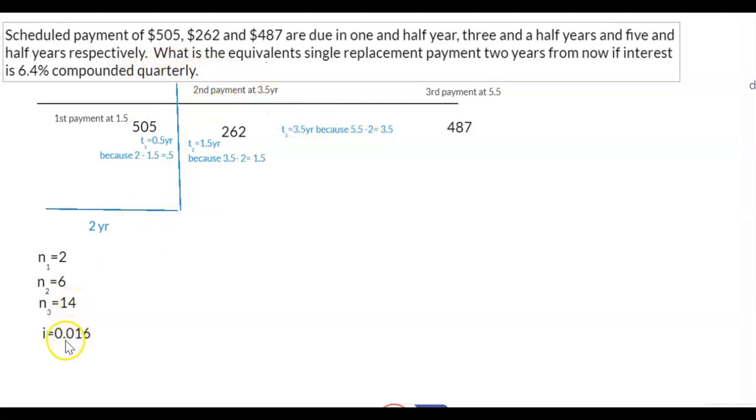The interest rate is 0.016. Remember, interest is 6.4 given in the question divided by how often it's compounded. So it's 0.016. The interest rate does not change in this question.